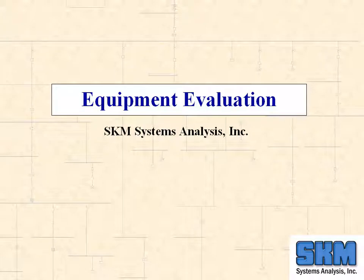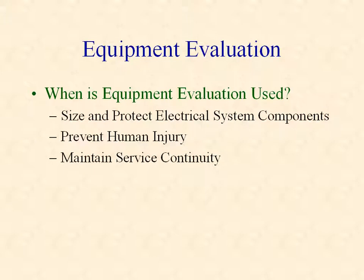This tutorial reviews the Equipment Evaluation module in the SKM Power Tools software program. Equipment Evaluation automatically compares equipment ratings in the power system model with the normal and abnormal operating conditions expected. It is used to protect electrical system components and to prevent human injury by confirming that protective devices are properly sized and have sufficient interrupting ratings to safely isolate electrical problems. Equipment Evaluation also helps maintain service continuity by assuring adequate equipment withstand and continuous current ratings.